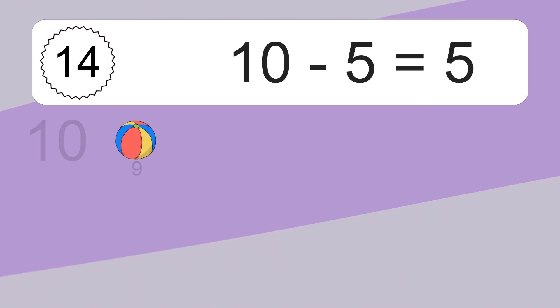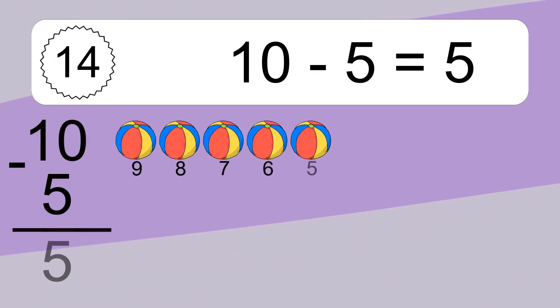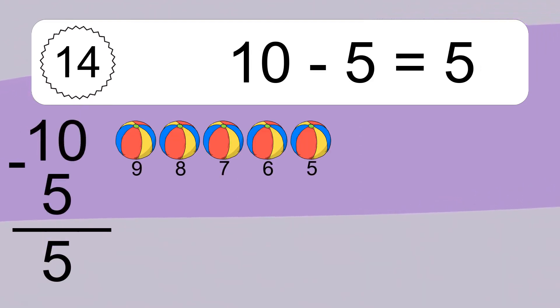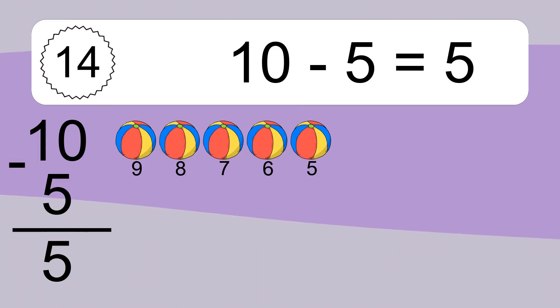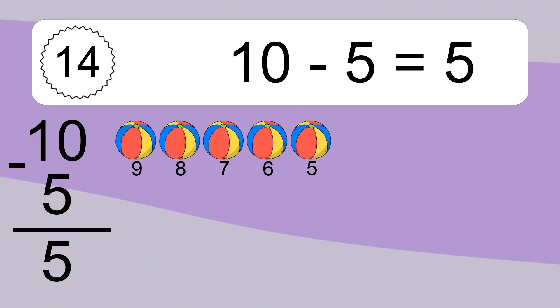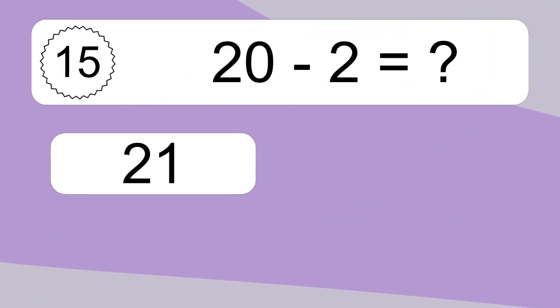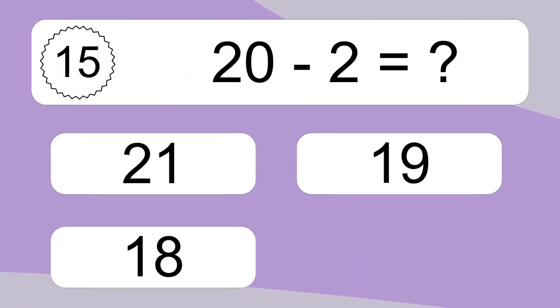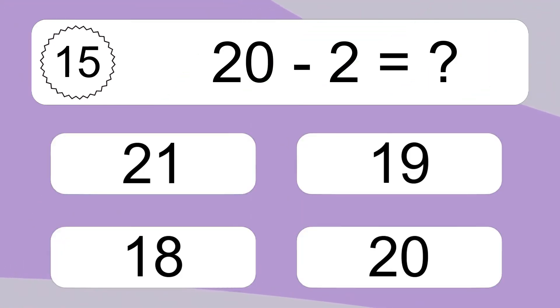10 minus 5 equals what? 10 minus 5 equals 5. Let's count it: 9, 8, 7, 6, 5. 10 minus 5 equals 5.